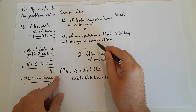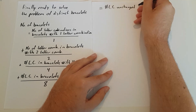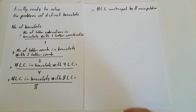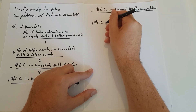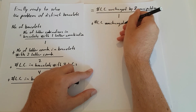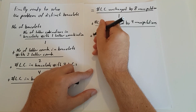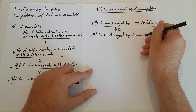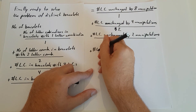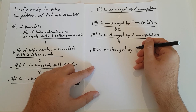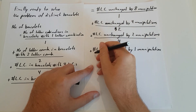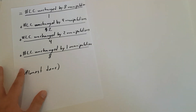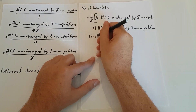And this is where we need that earlier result. A letter combination from a bracelet with a single letter combination is one that is unchanged by 8 different manipulations. A letter combination from a bracelet with 2 letter combinations is unchanged by 4 different manipulations. A letter combination from a bracelet with four letter combinations is unchanged by exactly two manipulations. And a letter combination from a bracelet with eight letter combinations is unchanged by only the single leave-it-be manipulation. We extract a factor of one-eighth to make everything integer, and then study what's left inside the bracket.